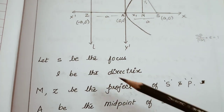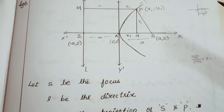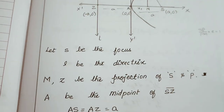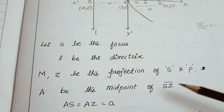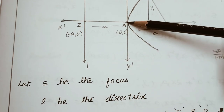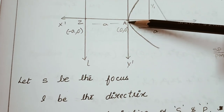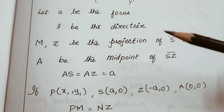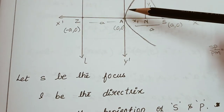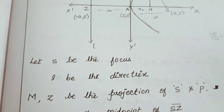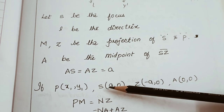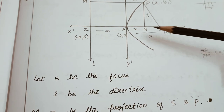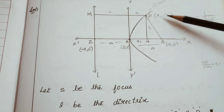Let S be the focus, L be the directrix. Let Z be the projection of S onto the directrix, and M be the projection of P onto the directrix. A is the midpoint of SZ. A is the origin and also the midpoint of S and Z, because AS = AZ = a. So: P is (x1, y1), S is (a, 0), Z is (-a, 0), and A is (0, 0).